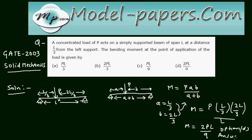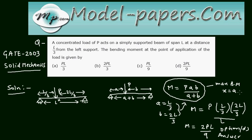This is your answer. Remember that this bending moment formula gives the maximum bending moment acting at x = a, i.e., at the point of application of the load, for this type of simply supported beam. We can also derive this bending moment formula — let us derive it.